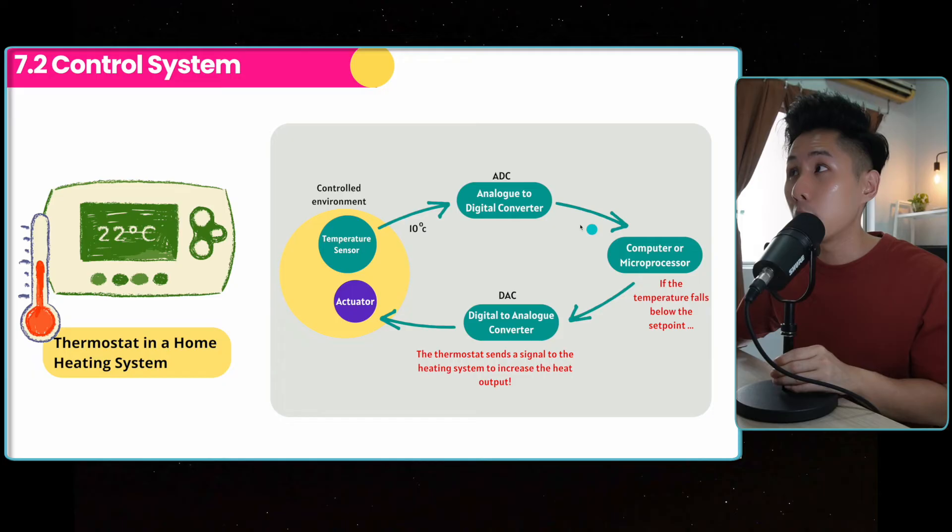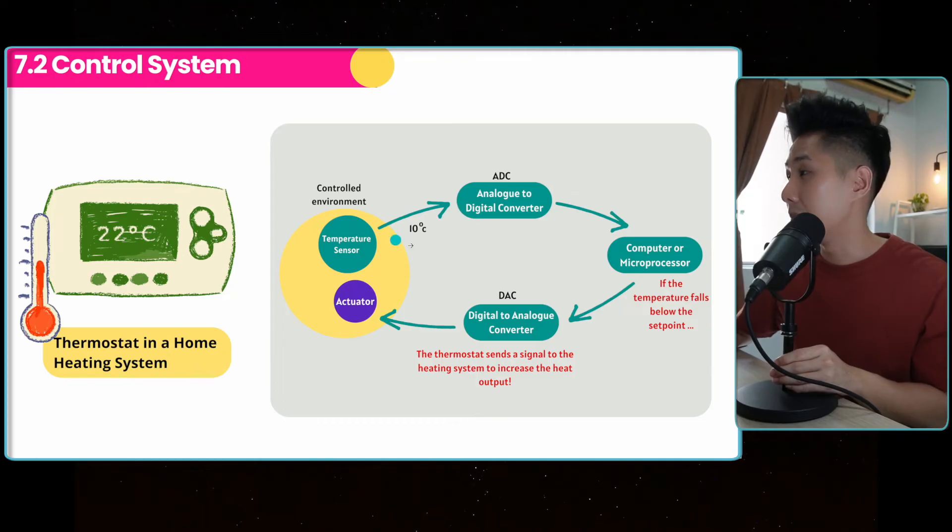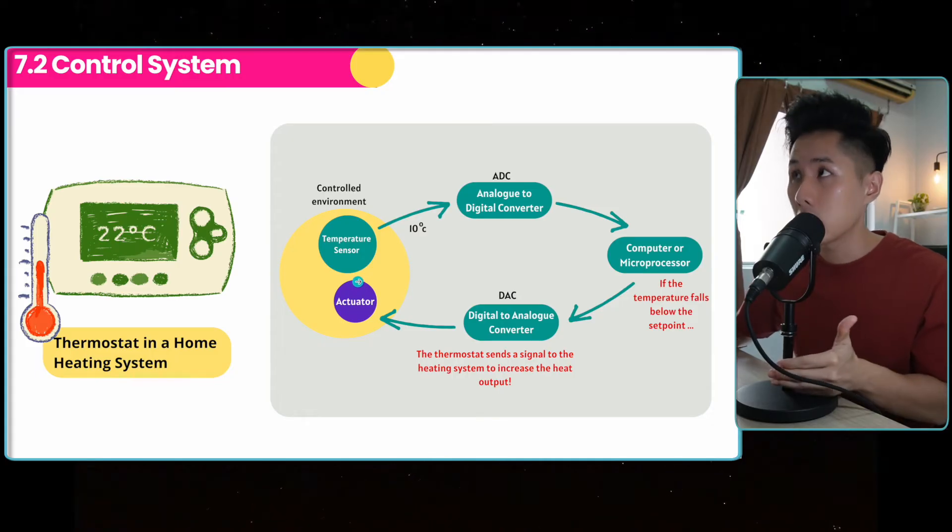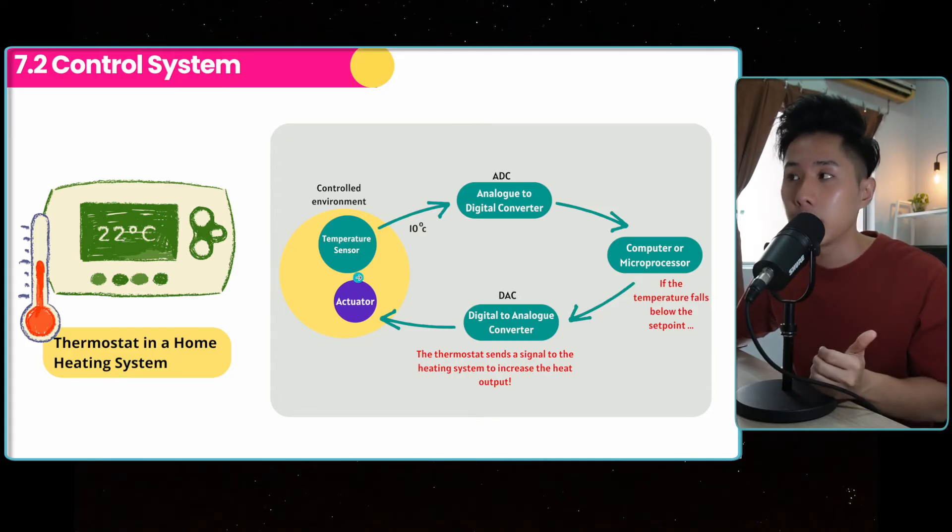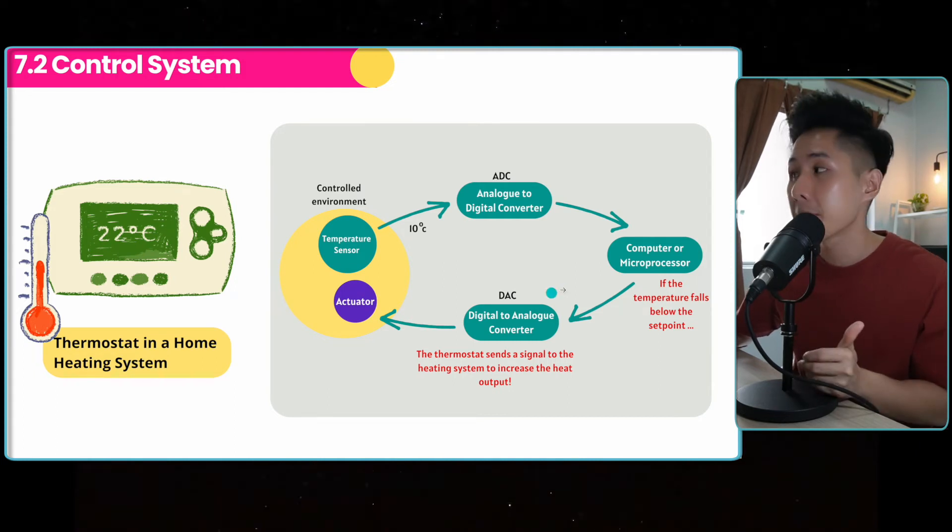Let me give you some examples of where you can find a control system. The thermostat in a home heating system measures the temperature. If it falls below the set point, the thermostat sends a signal to the heating system to increase the heat output. Again, you can see that that's the difference between a control system and a monitoring system. They actually do something about it instead of just providing a warning.